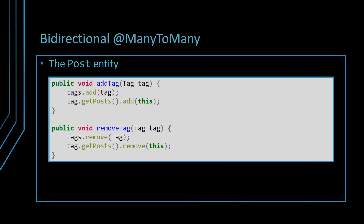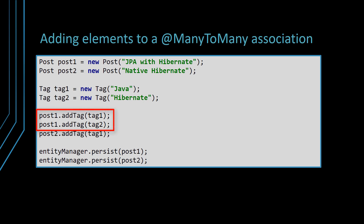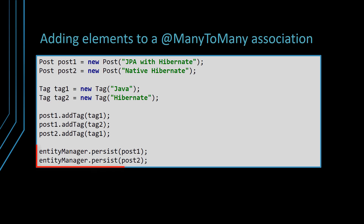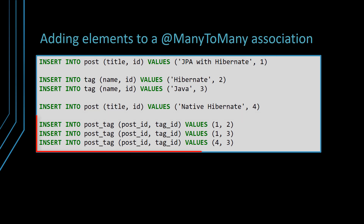Like every bidirectional JPA association, providing the utility methods for adding and removing elements is good practice, and the many-to-many relationship is no different. Now, let's consider that we create two post and two tag entities. We are going to associate the first post entity with both tags, and the second post entity with the first tag only. Because the tags property in the post entity cascades the persist and merge entity state transitions, we only need to persist the post entities, and the tag entities will be persisted as well. When running this code example, Hibernate is going to execute the following SQL insert statements. As expected, two post and two tag rows have been added, as well as three join table records that hold the relationship between posts and tags.